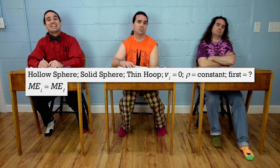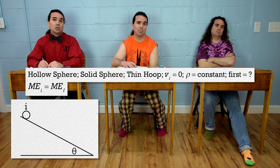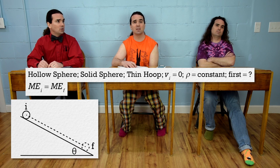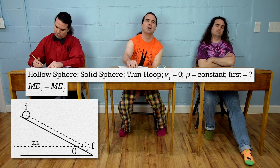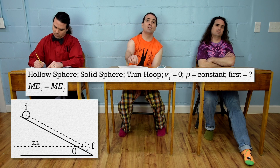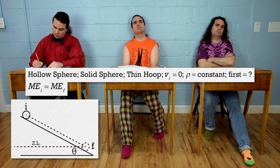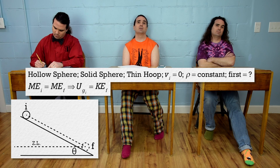For conservation of mechanical energy, set the initial point at the top of the incline, the final point at the bottom of the incline, and the zero line at the height of the center of mass of the objects at the final point. Initially, the only type of mechanical energy the objects have is gravitational potential energy, and the only type they have at the end is kinetic energy.